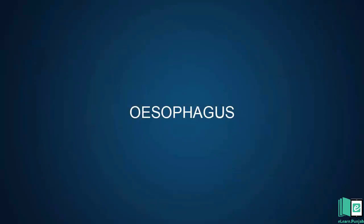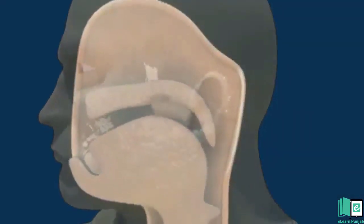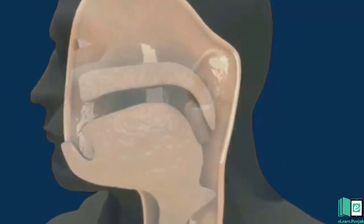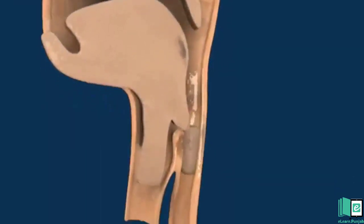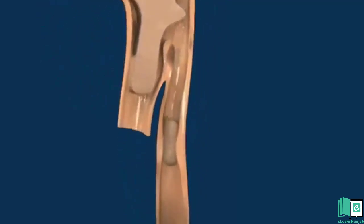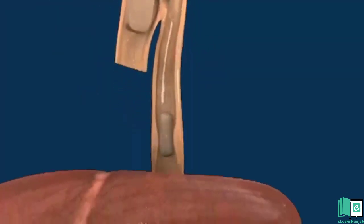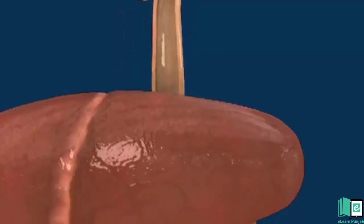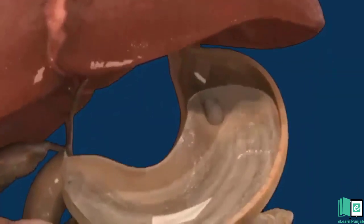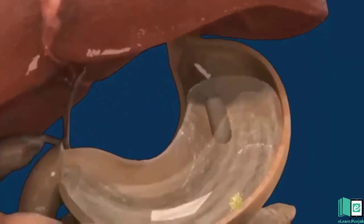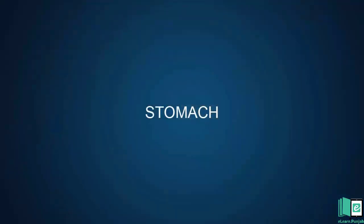The chewed food is then pushed from the mouth into the esophagus. The esophagus is a large tube that carries food from the mouth to the stomach. The esophagus uses wave-like muscular movements to push the food to the stomach. These wave-like movements are called peristaltic movements and the process is called peristalsis.